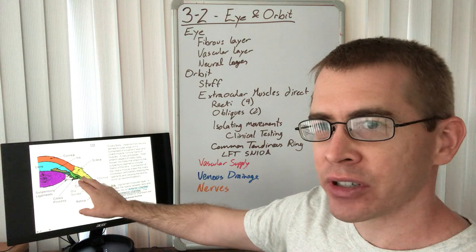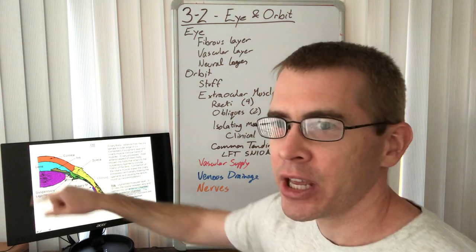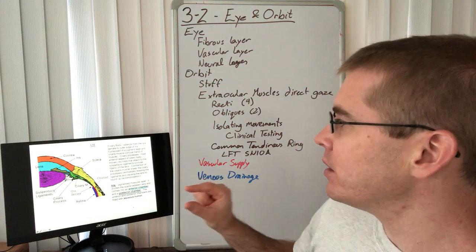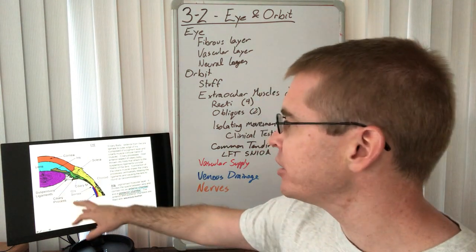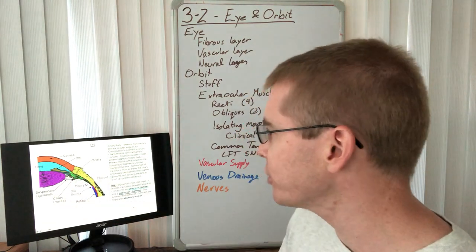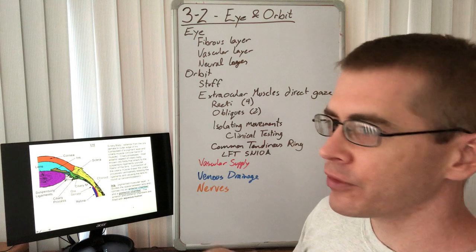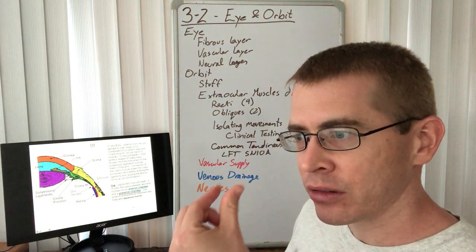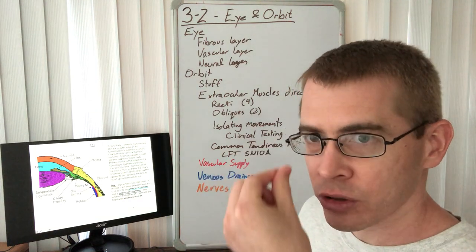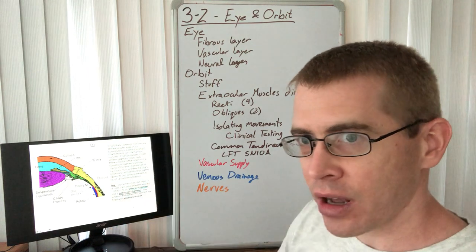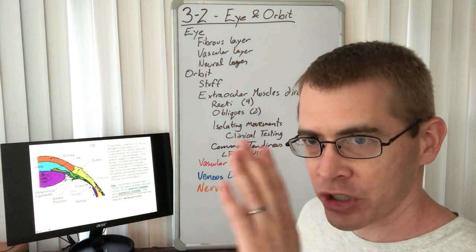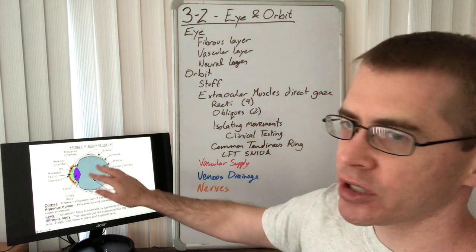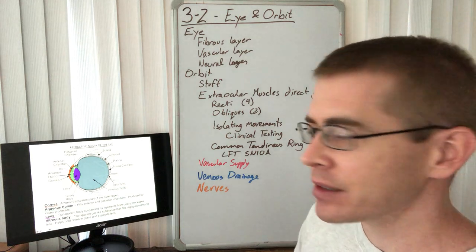The iris is the pigmented muscular structure visible through the cornea. It separates the front of the eye into an anterior chamber and a posterior chamber, both filled with aqueous humor — a clear liquid that allows transmission of light through the cornea, through the anterior chamber, to the lens, and finally to the vitreous body inside the eye.